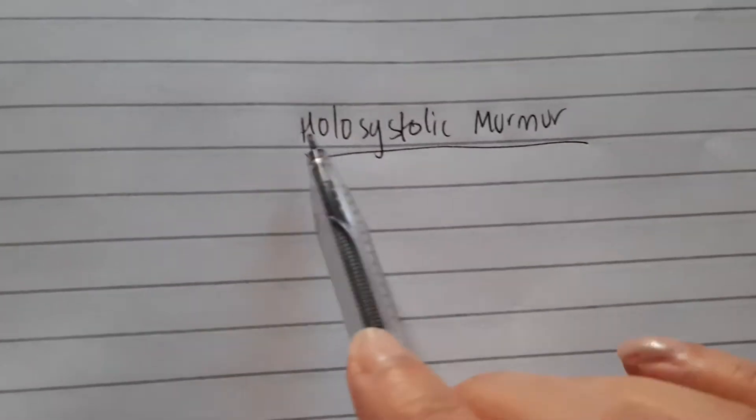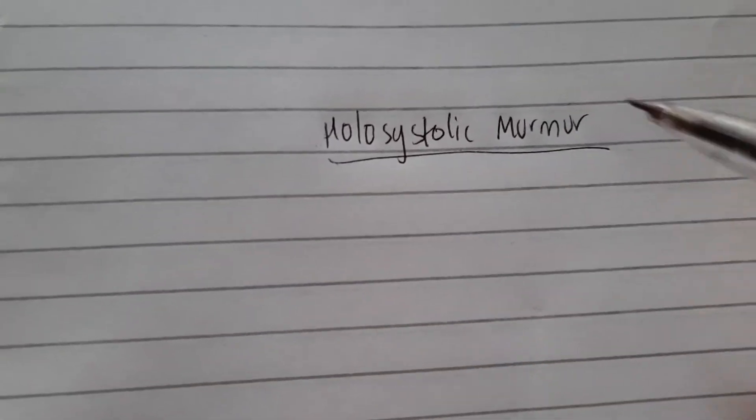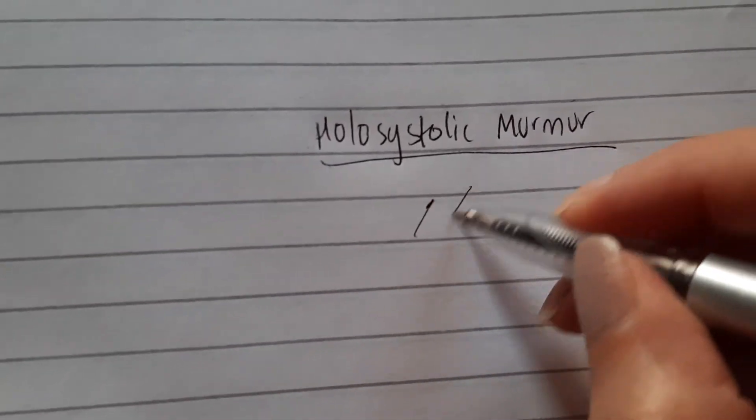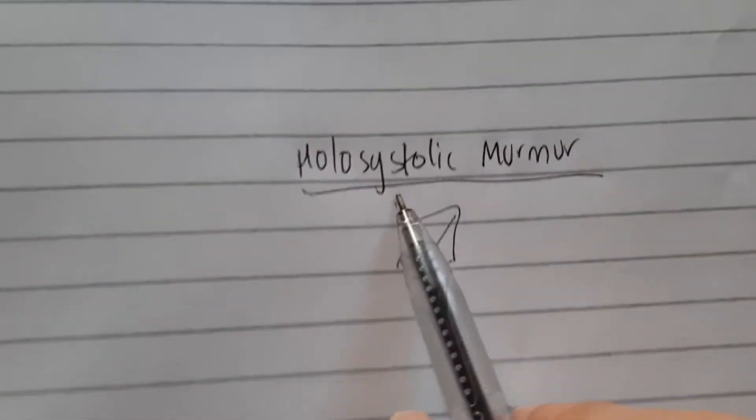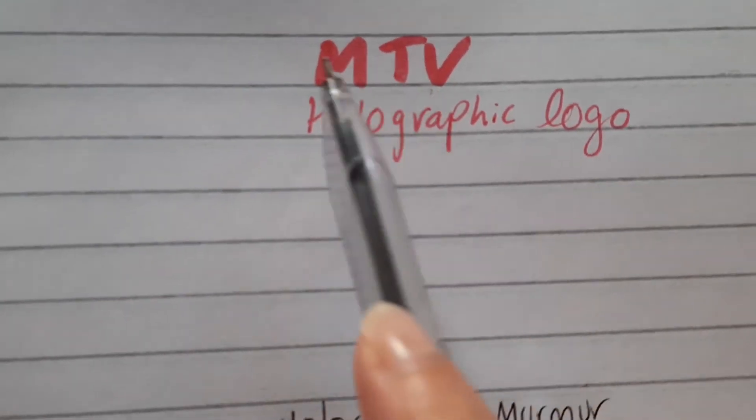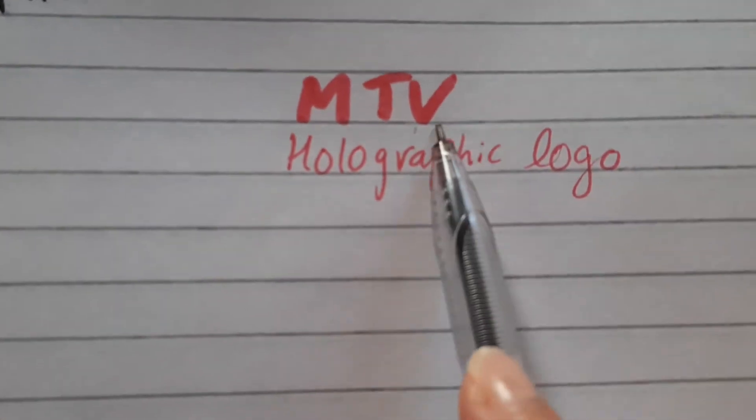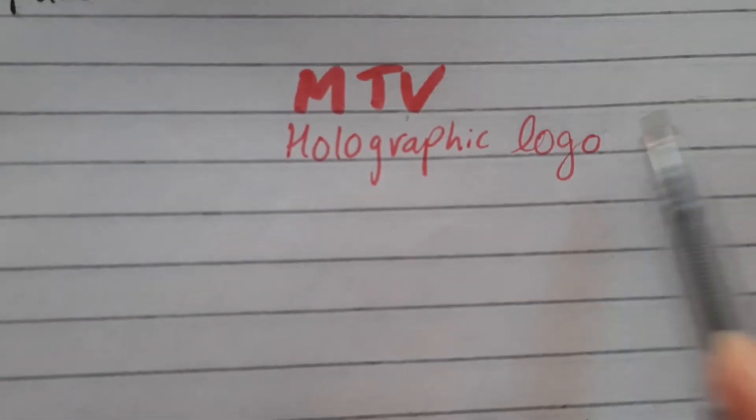The mnemonic is really easy. So holosystolic, you can think of it as holographic, you know those holographic sheets you can take a look, they're like silver and multicolored. So the mnemonic is this: MTV, the popular music channel, has a holographic logo.